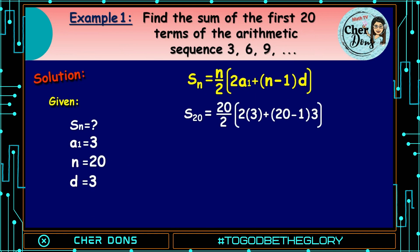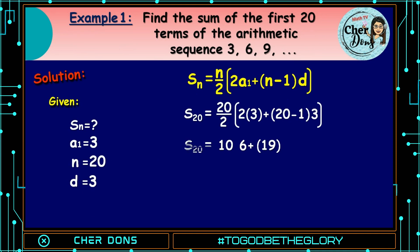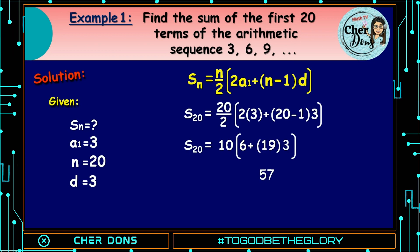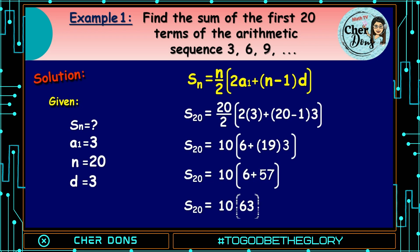S of 20 is equal to 20 over 2 — that is 10 — multiplied by 2 times 3, that is 6, plus quantity 20 minus 1, that is 19, multiplied by 3. So S of 20 is equal to 10 multiplied by (6 plus 57), which is 63. S of 20 is equal to 10 times 63, which equals 630. Therefore, the sum of the first 20 terms is 630.